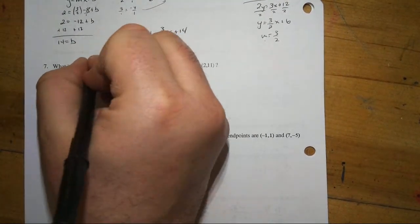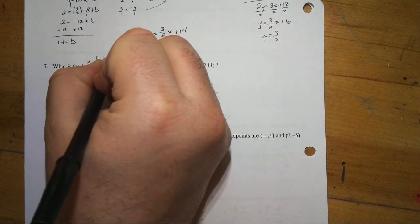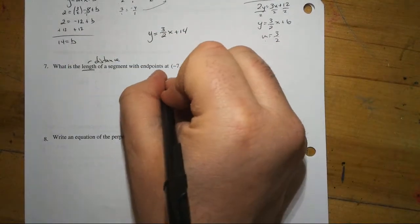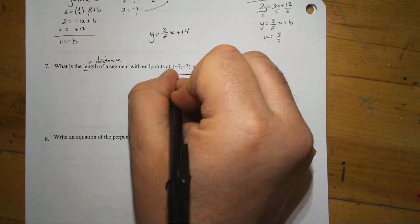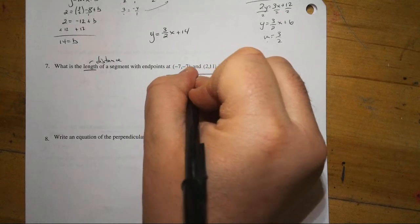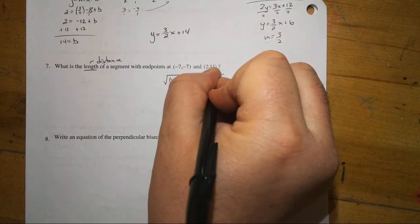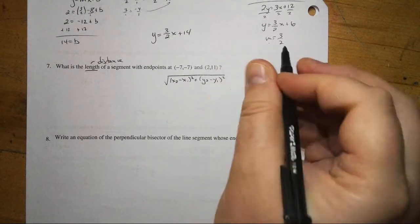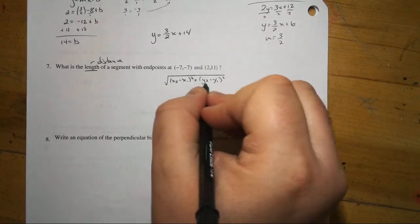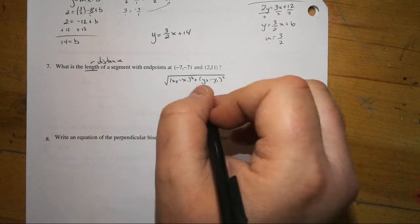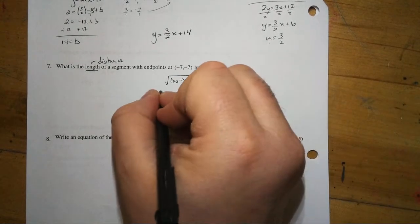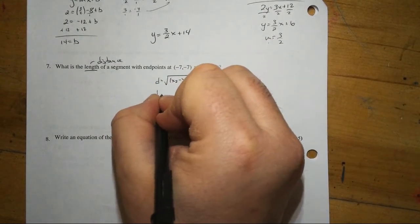Length of a segment. Length is another word for distance. So, square root. It's x2 minus x1 squared plus y2 minus y1 squared. Remember, the only one you're adding the x's and the y's is going to be the midpoint. Slope and distance, you always subtract.